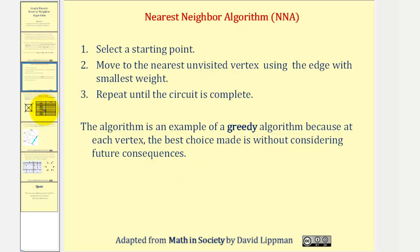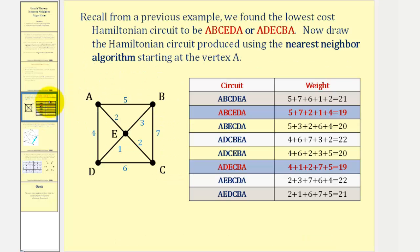In our previous lesson on the brute force algorithm, we found the optimal Hamiltonian circuit of this graph to be A, B, C, E, D, A, or in the reverse order, A, D, E, C, B, A. Remember, these two circuits are equivalent.